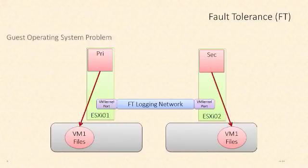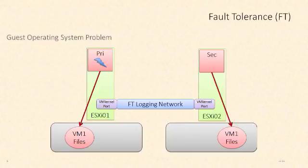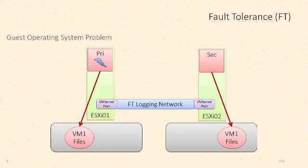What about a failure at the guest operating system level? For example, if we have Windows running on this VM and we get the Windows blue screen of death — what's going to happen is that exact same problem will be replicated over the fault tolerance logging network and the secondary VM will be in the exact same situation. Its instance of Windows will have the blue screen of death as well. So fault tolerance doesn't protect you from problems at the operating system level, but if the entire VM fails or if the ESXi host fails, we'll fail over immediately to that secondary VM.